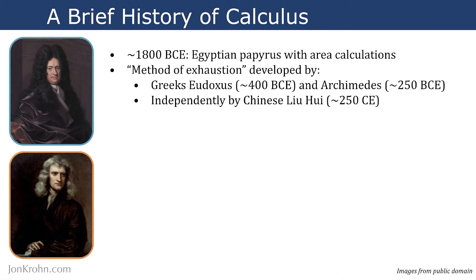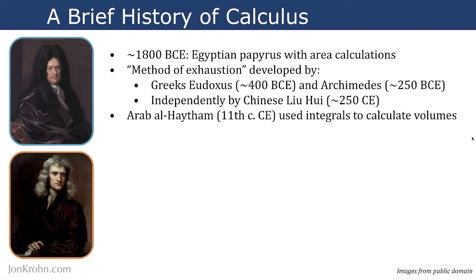Going another millennium into the future, to the 11th century of the Common Era, the Arab scholar al-Haytham began using integrals to calculate volumes. Up until this point in history, all of the calculus-related calculations on record involved finding the area of a shape — all related to integral calculus — but it wasn't until 1,000 years ago that al-Haytham developed the kinds of integral techniques we still use today.